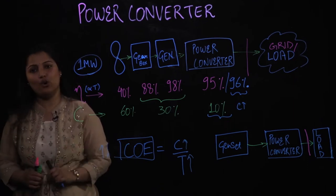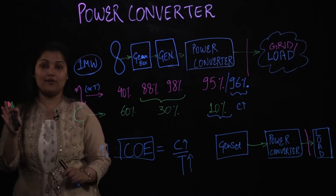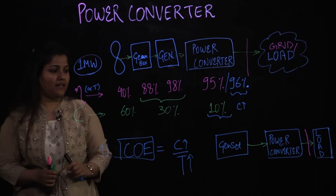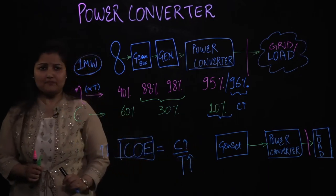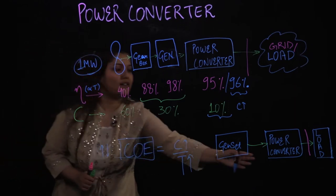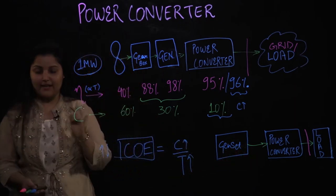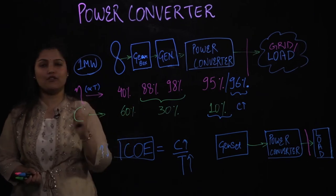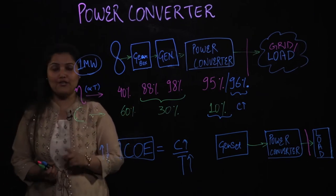You can consider this for lower power levels too, depending on whether you are talking about centralized or distributed generation. For a diesel genset, the same question would apply — what power converter to choose? Choosing a better power converter which gives you higher efficiency can reduce your cost of energy.